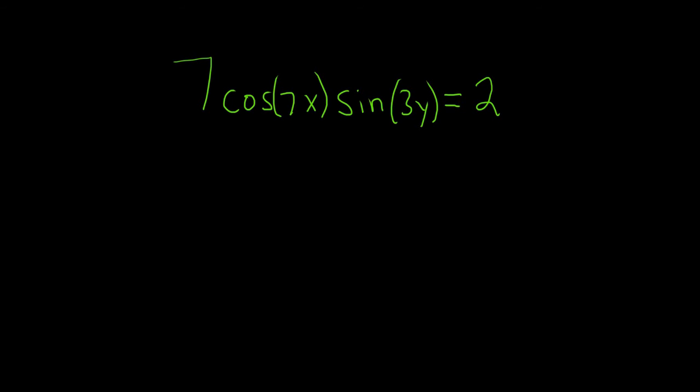When we do that we're going to use the product rule. For the product rule we'll think of this one as the first piece and then this one here as the second piece. Recall the product rule says if you have f times g and you take the derivative, it's the derivative of the first times the second plus the first times the derivative of the second. That's the product rule.